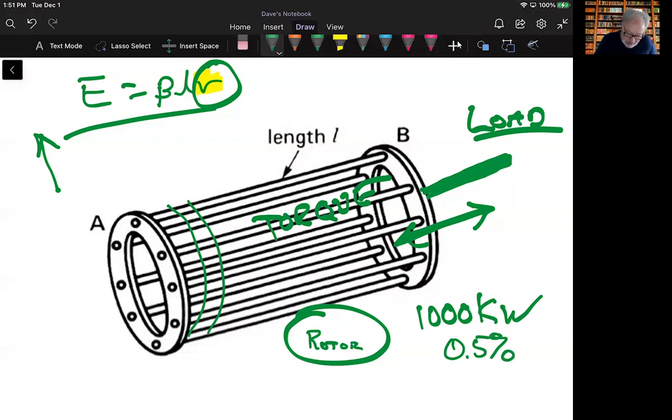Okay, so the slip, the difference between the magnetic field and the rotor field, is about 0.05% for large machines. And for smaller machines, like in the 10 kilowatt range, the slip seldom exceeds 5%, 5% difference.